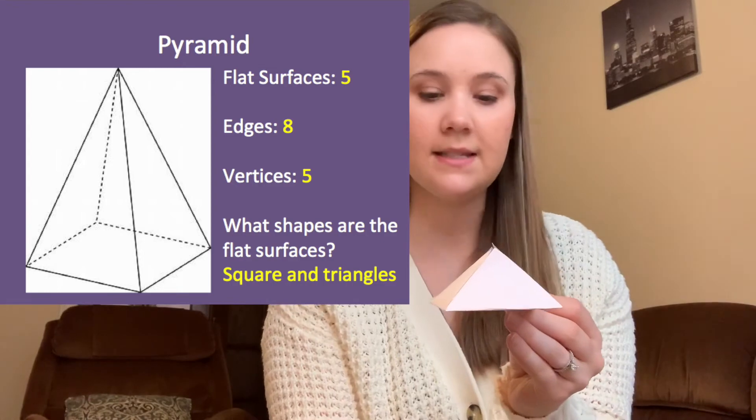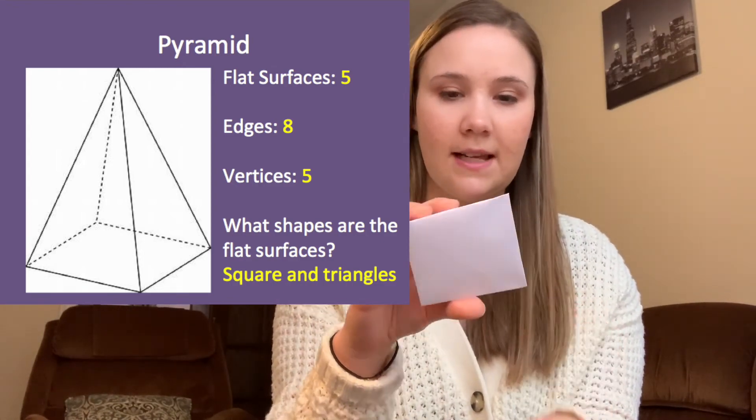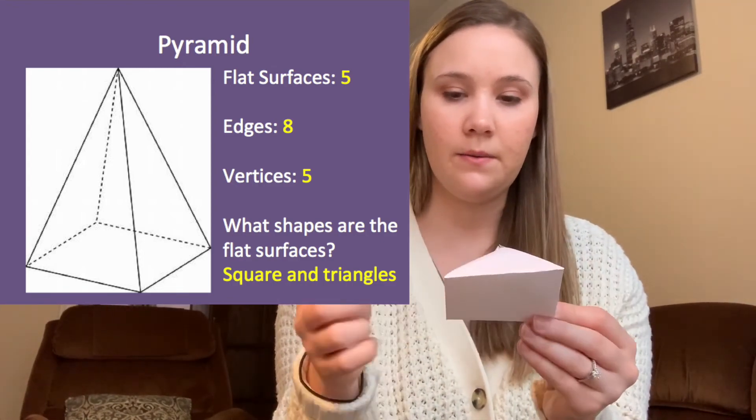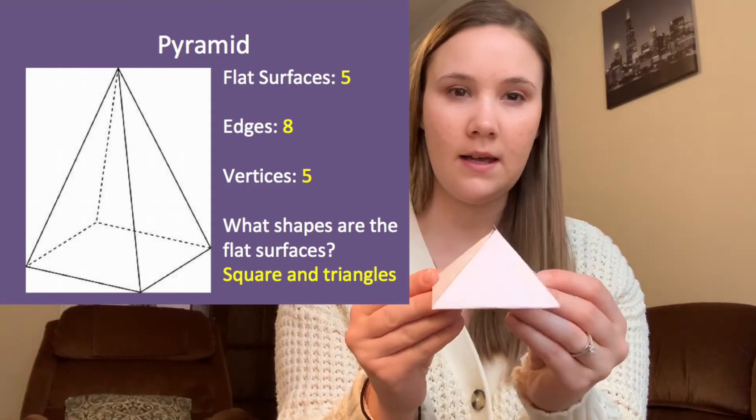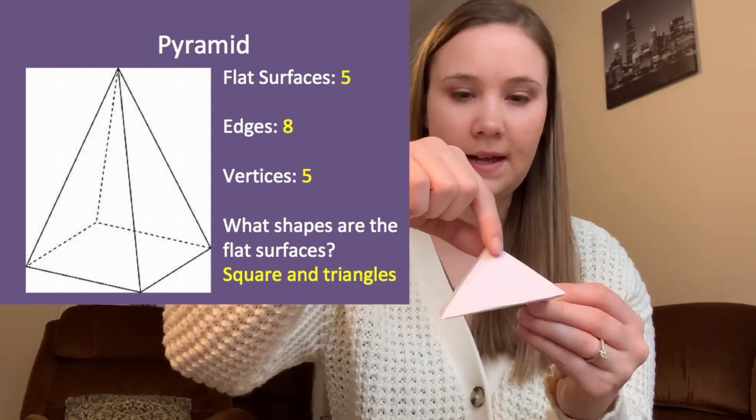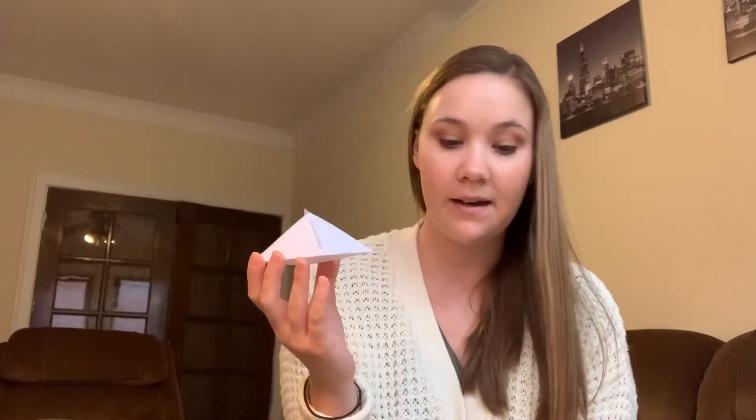Now let's count the vertices. Starting at the bottom: one, two, three, four, and then the tippy top makes five — so there are five vertices. Real-life examples of pyramids include the Egyptian pyramids, a tent, and a roof on some houses. It was so much fun looking around my apartment for solid figures, so I challenge you to look around your own house or apartment and see which solid figures you can find.